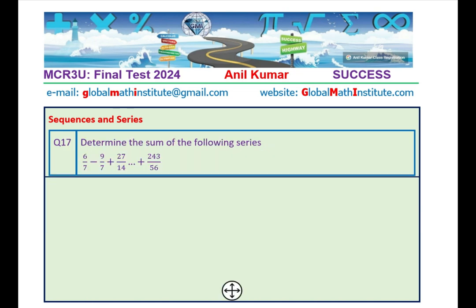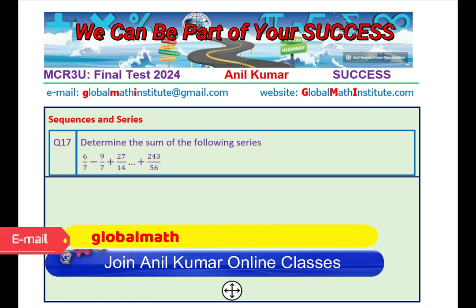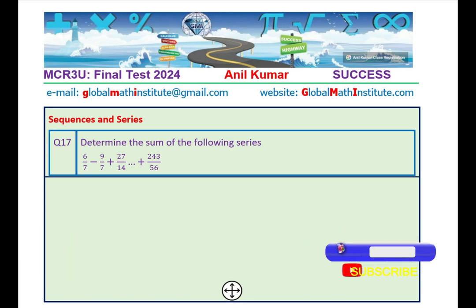Question number 17 is again sequences and series. We are given a series here. Determine the sum of the following series: 6/7 - 9/7 + 27/14 and so on. The last term is 243/56. You observe that it is alternating plus and minus signs. Find out the number of terms and then the sum of the series.